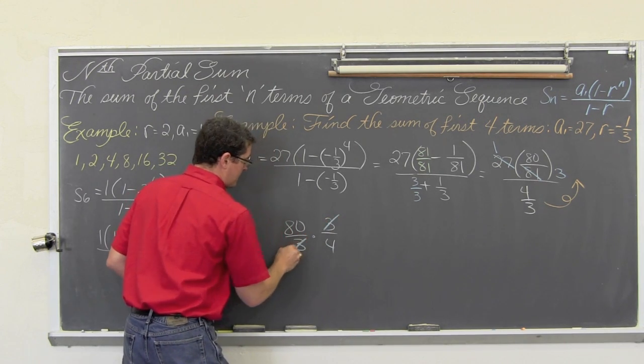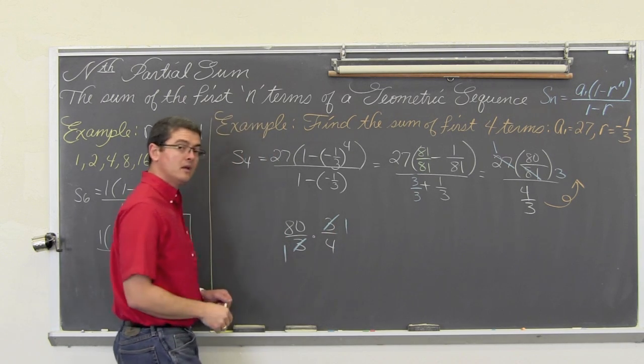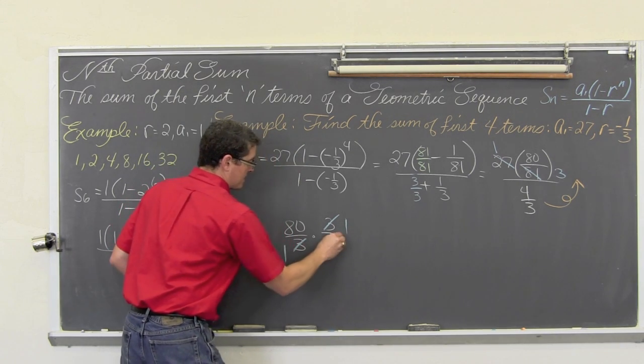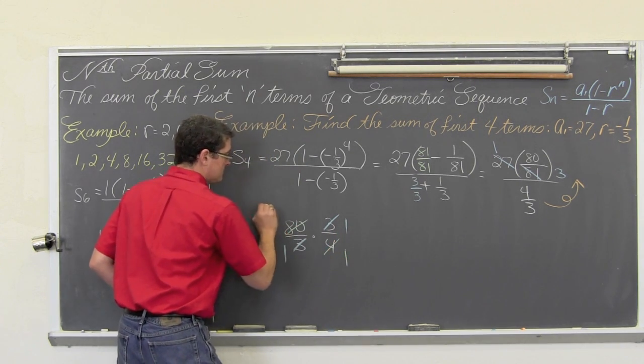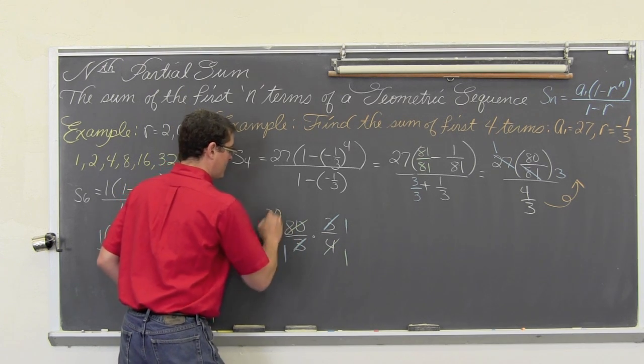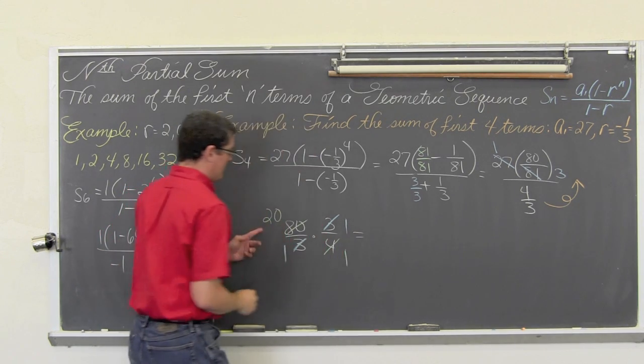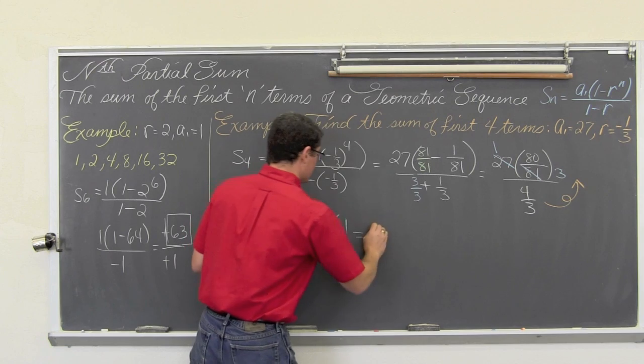We are also going to flip up the denominator, because when you divide fractions, this is 80 over 3 divided by 4 over 3, and you multiply by the reciprocal. We get 80 over 3 times 3 over 4. The 3 is going to cancel out, and the 4 is going to cancel out. 80 divided by 4 is equal to 20, and our partial sum comes out to be equal to 20.